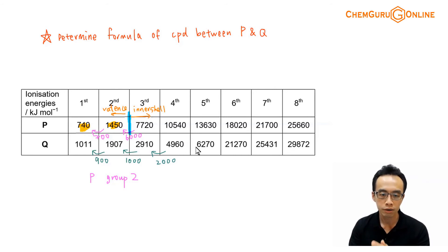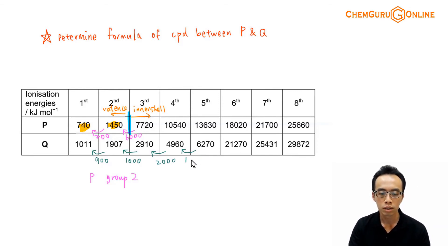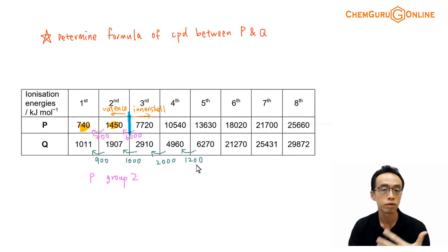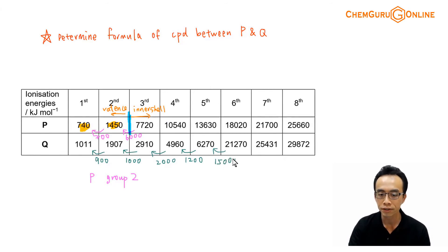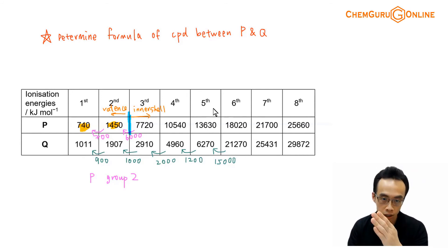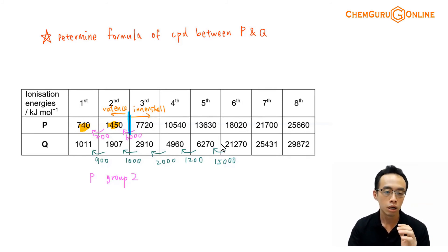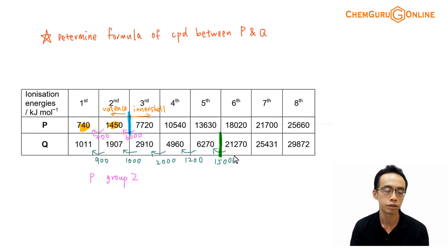Then from about 4900 to 6200, the difference is about 1000 plus — again not significant. Accuracy here is not so important, because what we want is a very, very obvious big jump. And involving the fifth to the sixth ionization energy, the jump is about 15,000 kJ per mole, which is very, very significant compared to all the previous ones. So we draw a line here to mark this very significant increase in ionization energy.